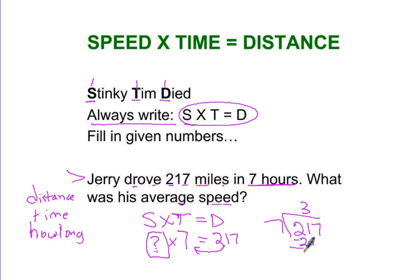That is 3. 21. 0. Bring down the 7. 1. So the answer is 31 miles per hour. The answer is 31.